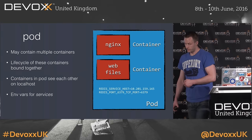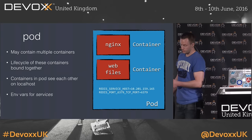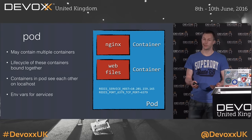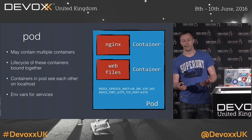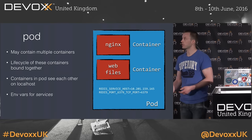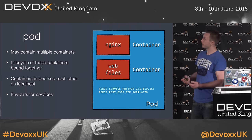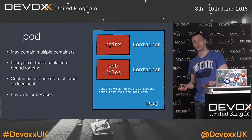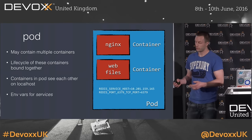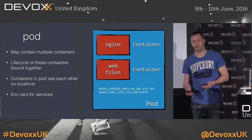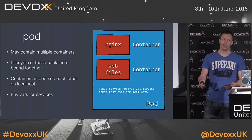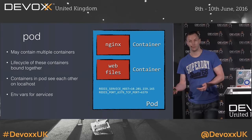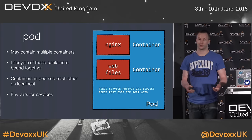Kubernetes doesn't actually talk about containers directly. We're not starting containers directly, but we're talking about pods. A pod is just an abstraction on top of a container. This is important because Kubernetes is not just about Docker containers, but it could also support formats like Rocket, which is an alternative to Docker. Currently the only supported format is Docker, but in the future there will be different formats supported as well.